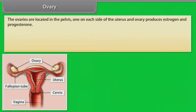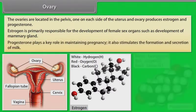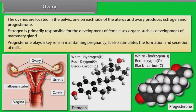The ovaries are located in the pelvis, one on each side of the uterus. The ovary produces estrogen and progesterone. Estrogen is primarily responsible for the development of female sex organs, such as development of mammary glands. Progesterone plays a key role in maintaining pregnancy and also stimulates the formation and secretion of milk.